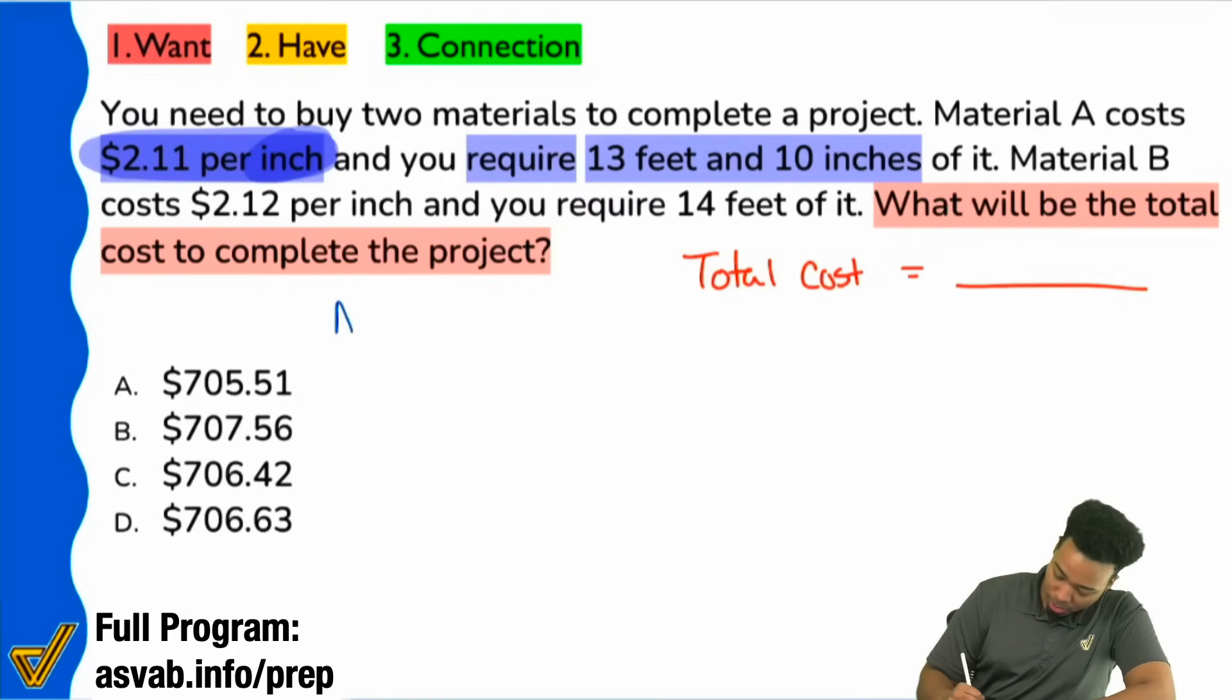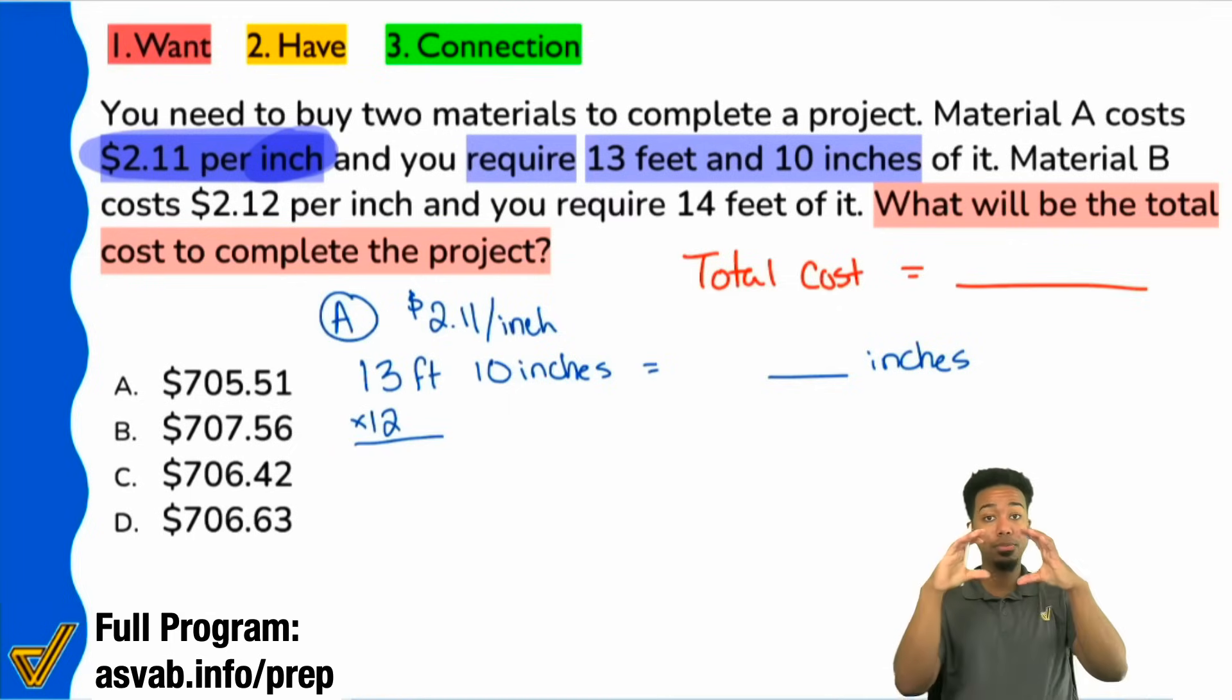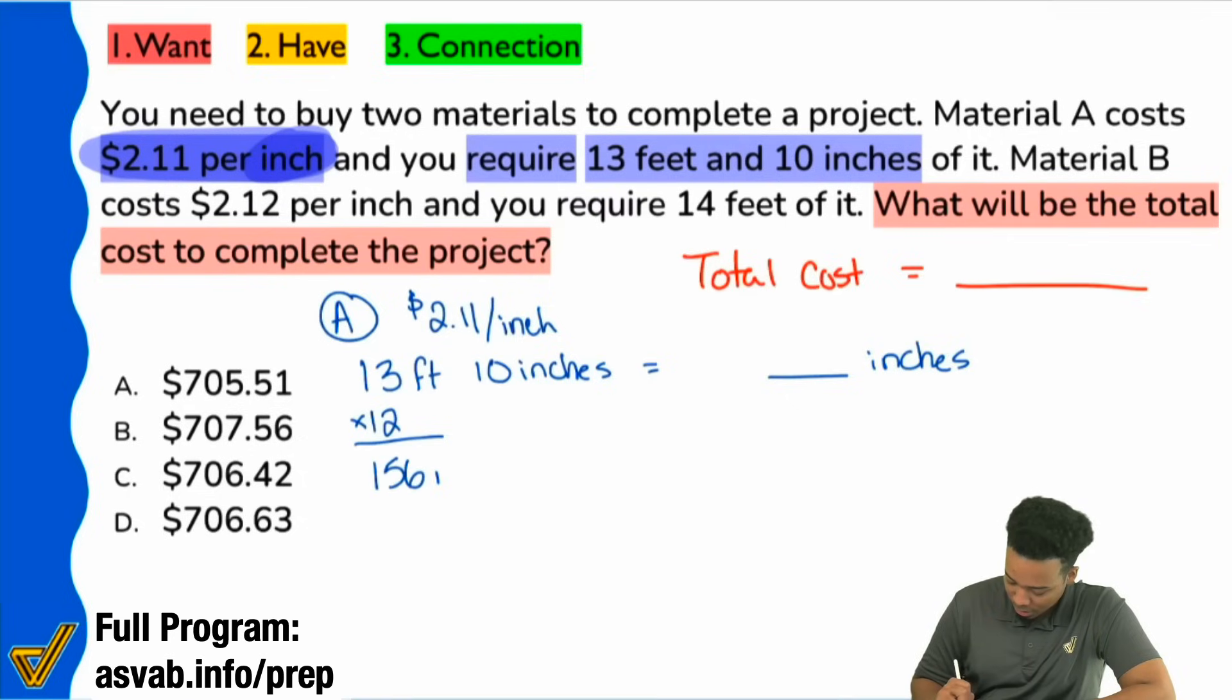So that's where this is going to come into play. For material A, we're going to have $2.11 per inch. And we need to figure out what 13 feet and 10 inches is. We want to know what that is in just inches. Because once we have that, we multiply the 2.11 by that total inch count, and then we're good. So the 13 feet, how many inches is that? We remember that when we go from a big unit to a small unit, we'll multiply. One foot is going to be 12 inches. So for every foot, we multiply by 12. 13 times 12, that's going to give us 156. 12 times 12, 144. Add another 12, that's going to be 156. So we have 156 inches here. And then we have to add up the extra 10 inches that we had before. So that's going to give us 166 inches.